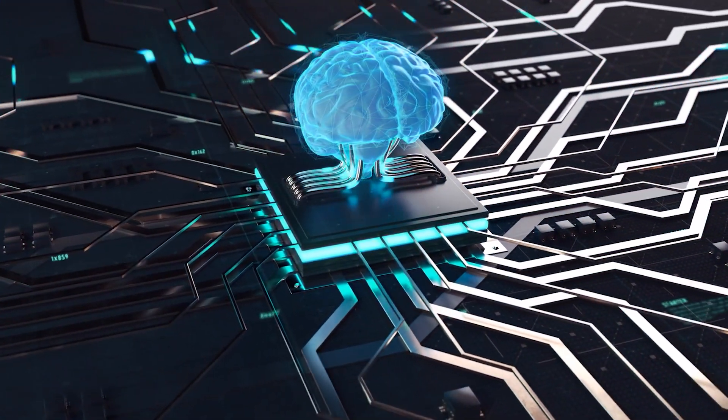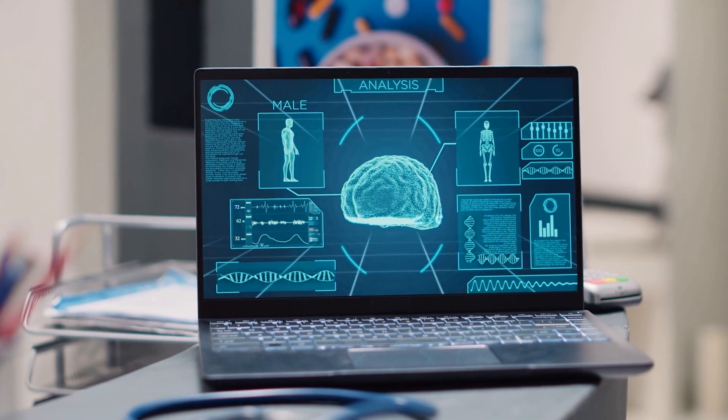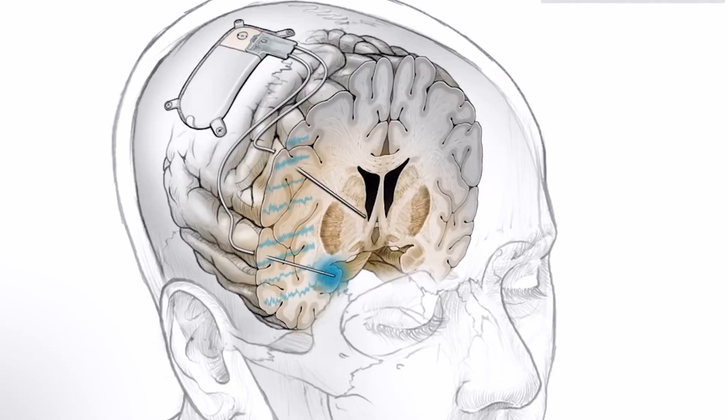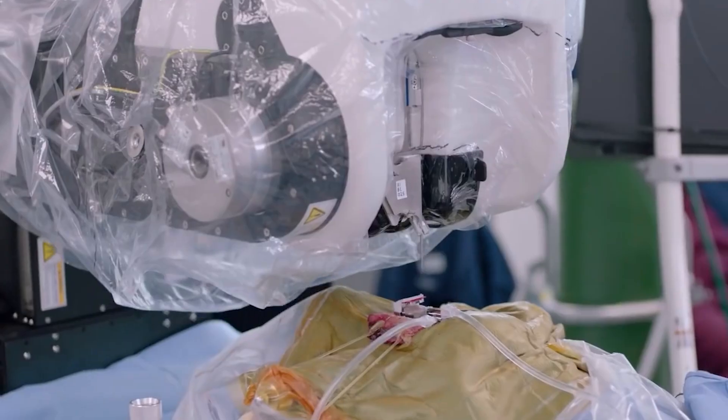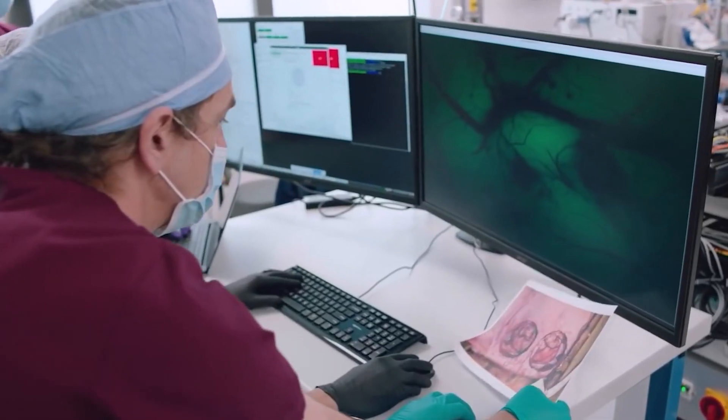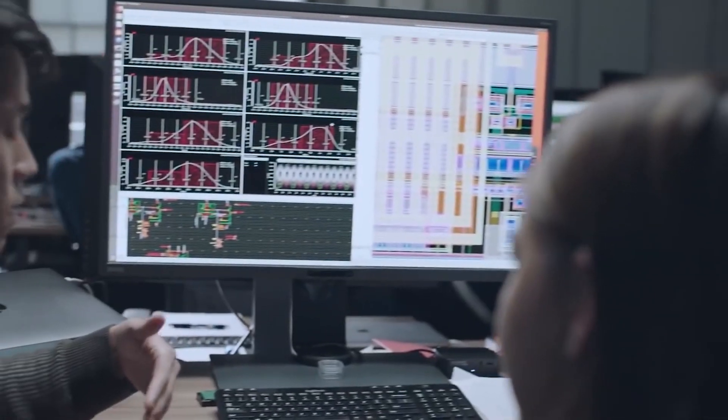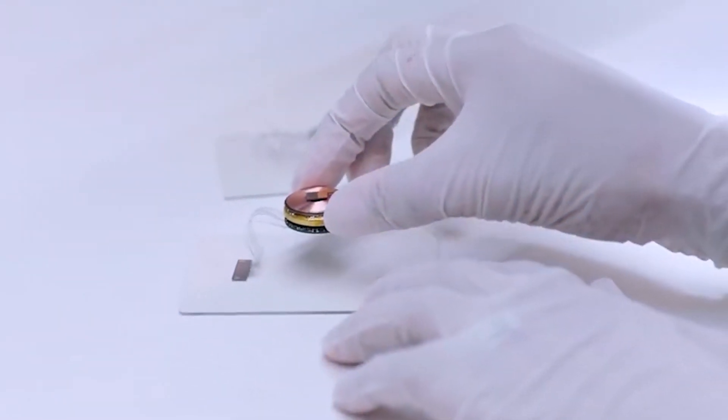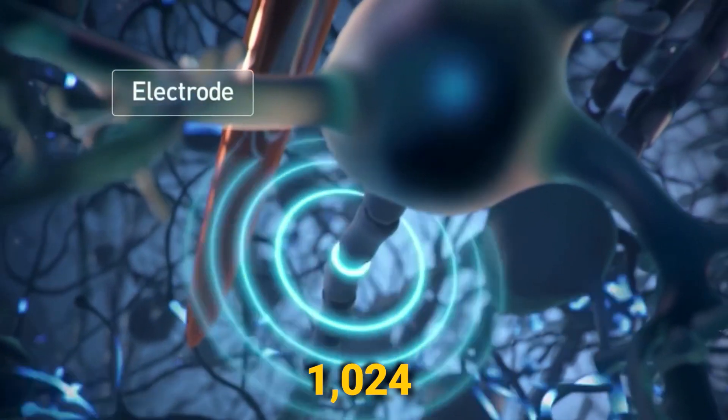Neuralink's groundbreaking technology is poised to usher humanity into a new era of limitless possibilities. The brain-computer interface, BCI, that Neuralink is developing represents a pivotal leap forward in merging our minds with advanced technology. This innovative BCI is centered around a tiny implantable device known as the Link, which holds the potential to transform our lives. The Link, a coin-sized brain chip, is surgically embedded beneath the skull, establishing a direct connection between the human brain and computers. This connection is facilitated by an intricate network of thin, flexible threads equipped with 1024 electrodes.